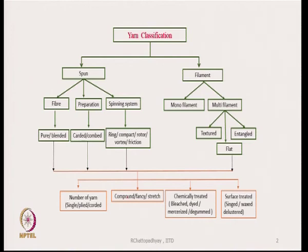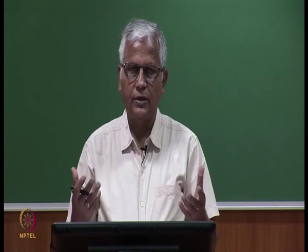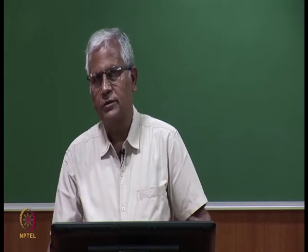We can treat yarns with chemicals to change their properties — such as bleached yarn, dyed yarn, mercerized yarn, and de-gummed yarn in the case of silk. The surface of the yarn can also be treated to give different physical characteristics, like singed yarn, waxed yarn, or delustered yarn. The world of yarn is very large, and different yarn types create lots of differences in the physical appearance and properties of fabrics. As a designer, you have many choices to manipulate and engineer properties of the final product.